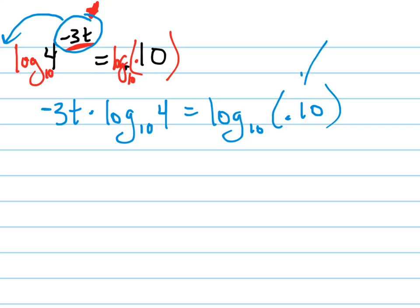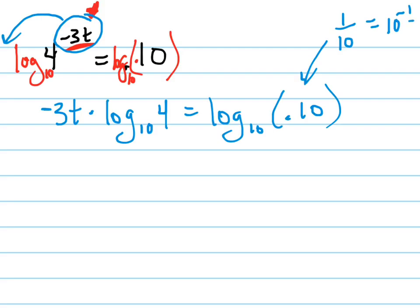Now 0.10 is just 1 tenth, right? Which is also 10 to the negative 1. So what's the log base 10 of 10 to the negative 1? What do I do with that negative 1 right there? Let me write this out. What's the log base 10 of 10 to the negative 1? Negative 1. That negative 1 comes down, and that goes away because of the properties of logs. So this all just equals negative 1.